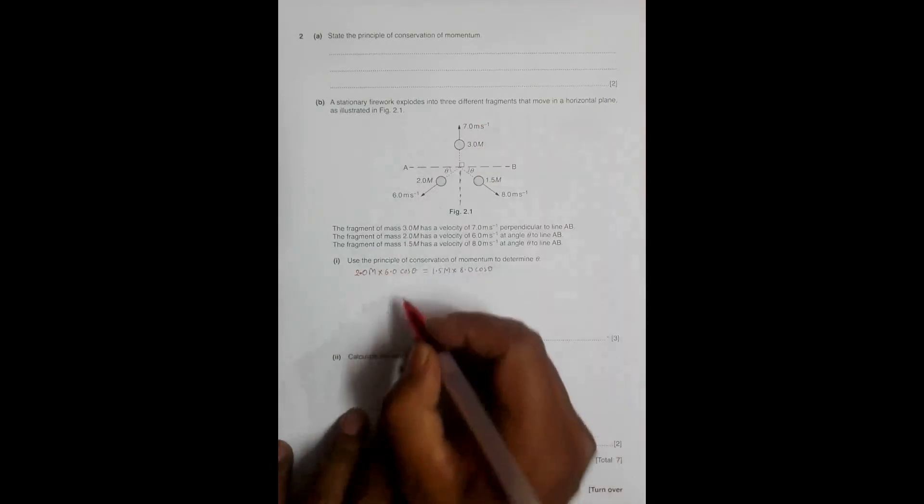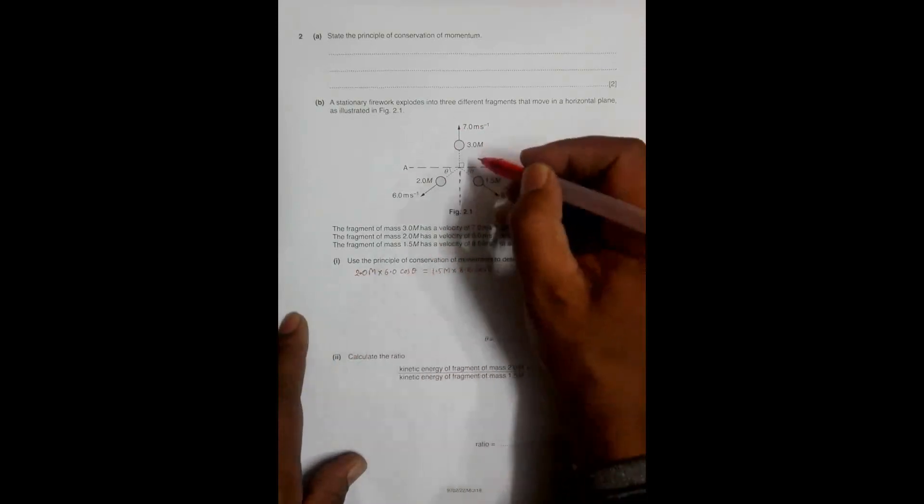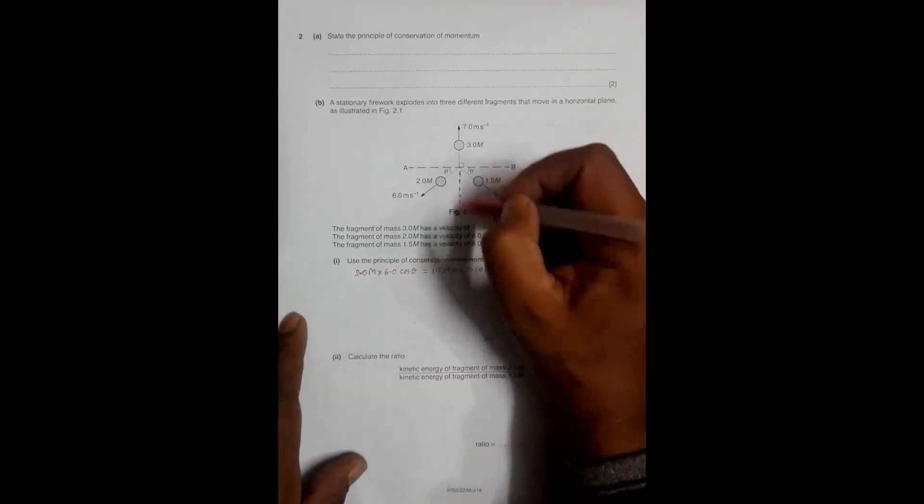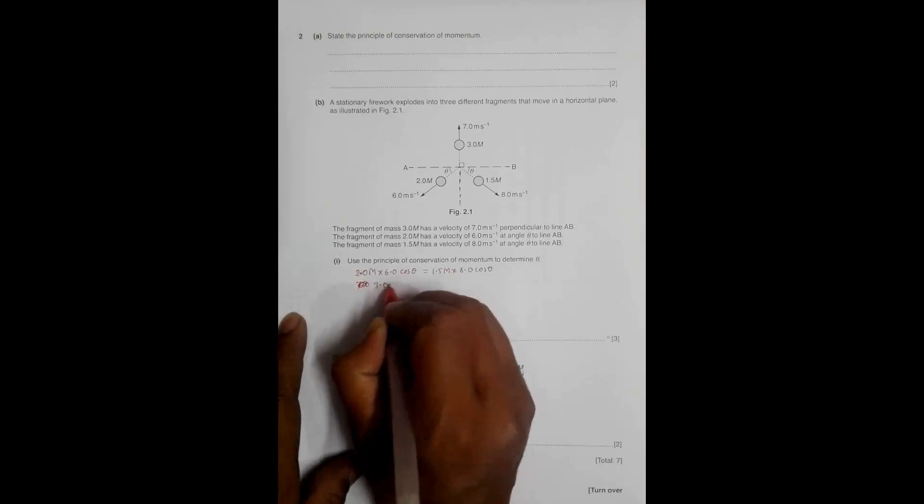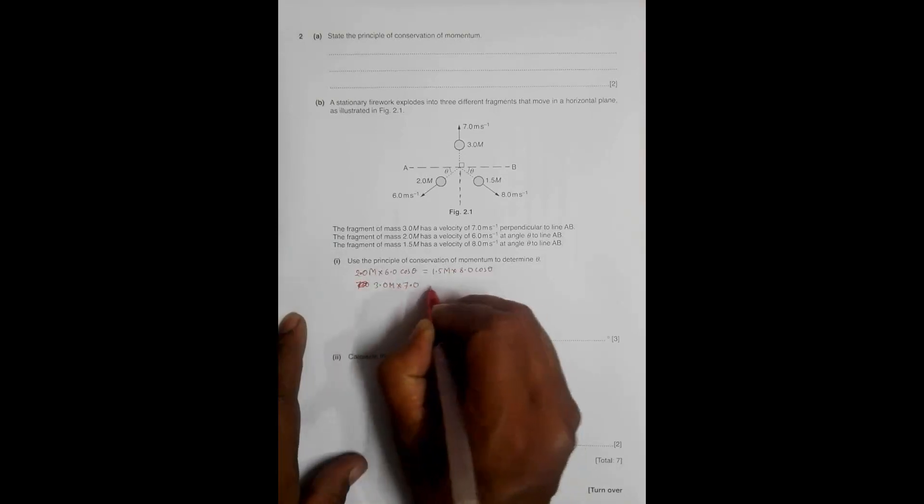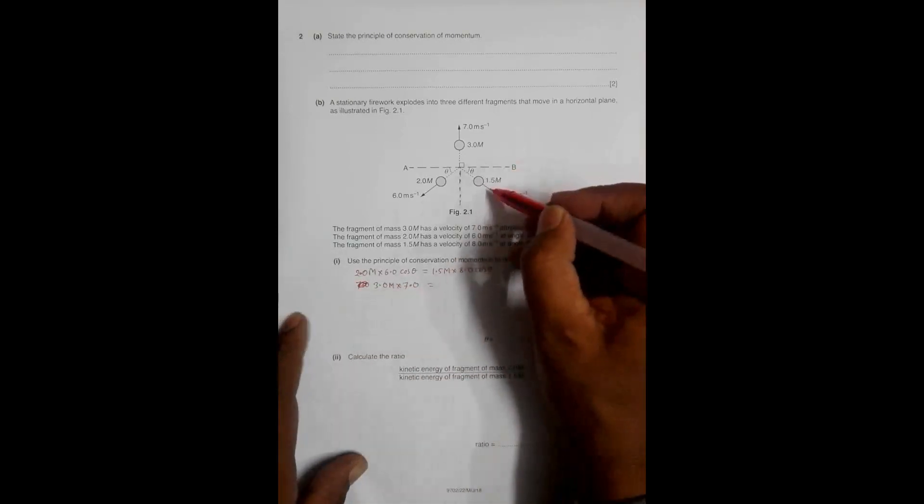Now if I consider the vertical direction, I should have 3.0m into 7.0 should be equal to the components of these things over here.